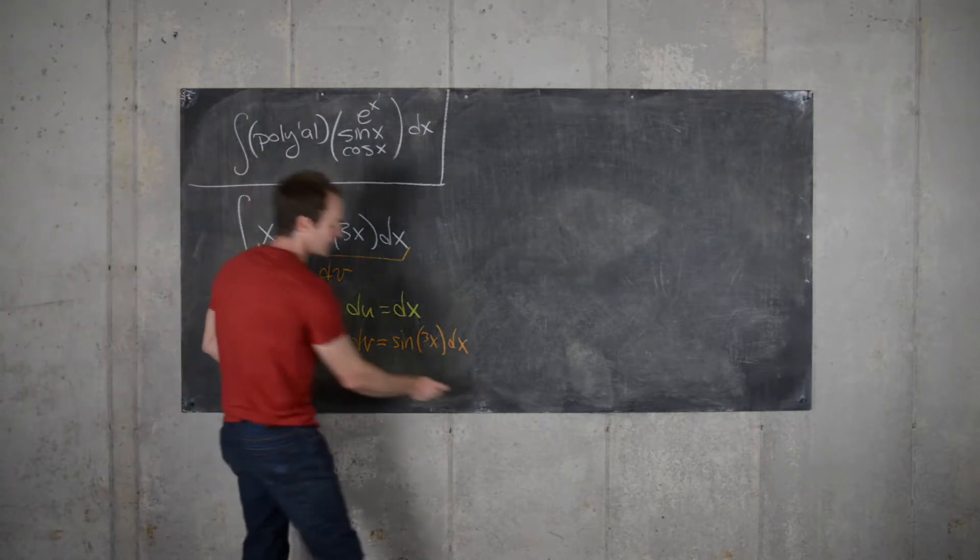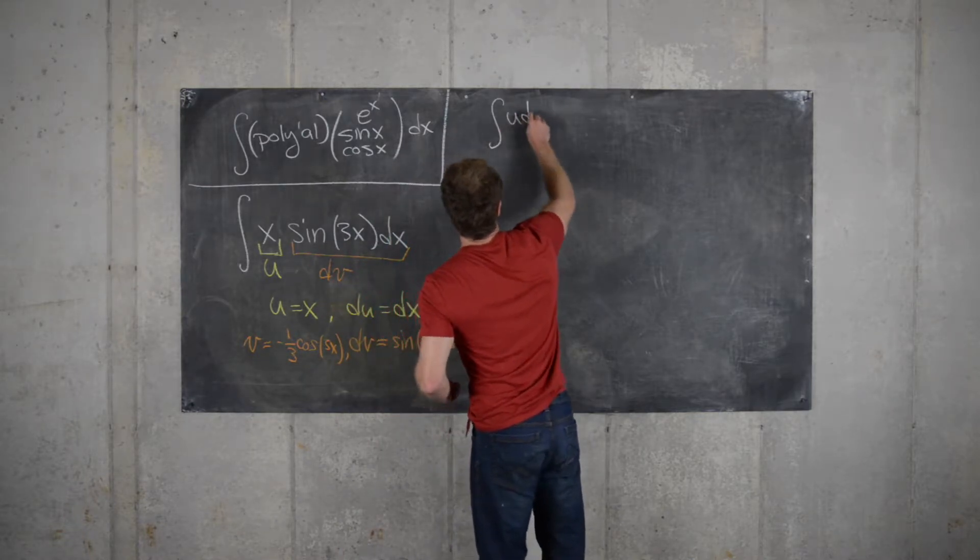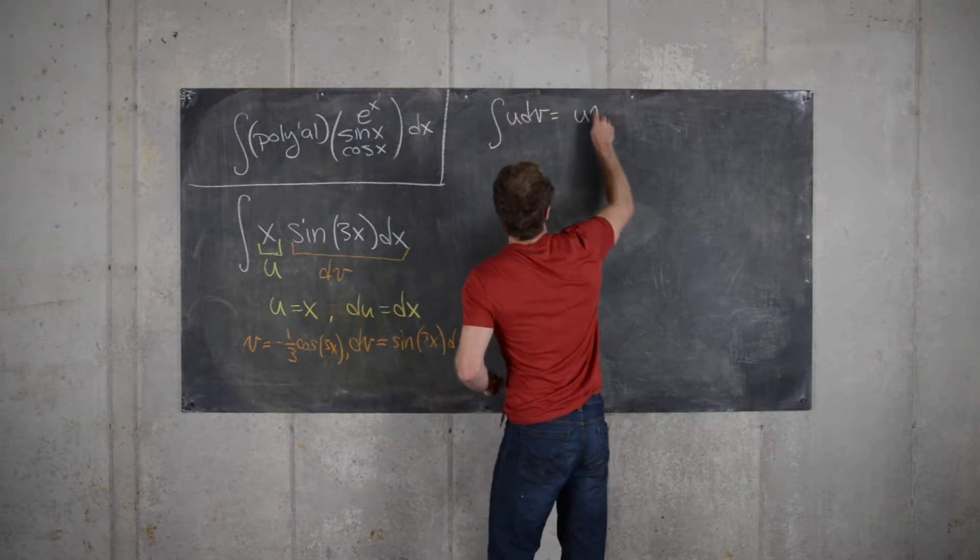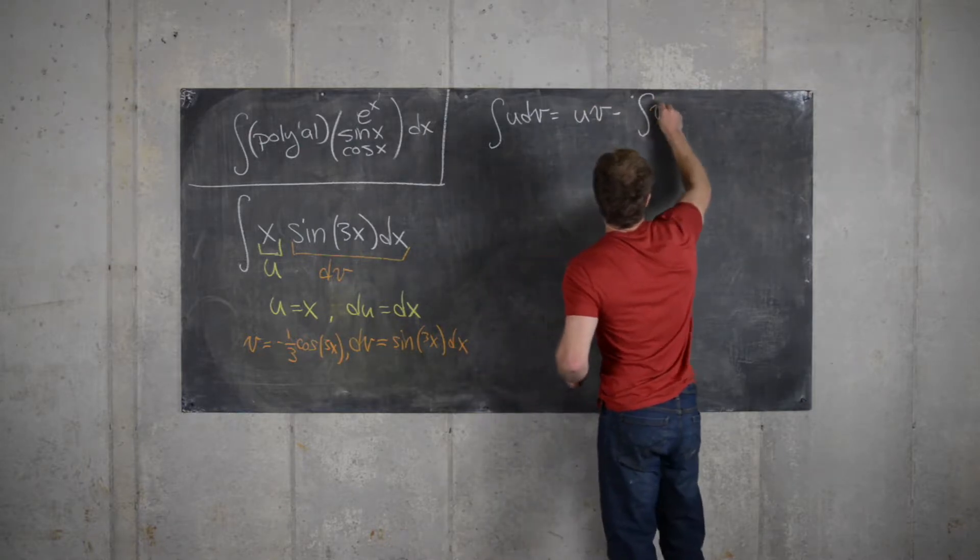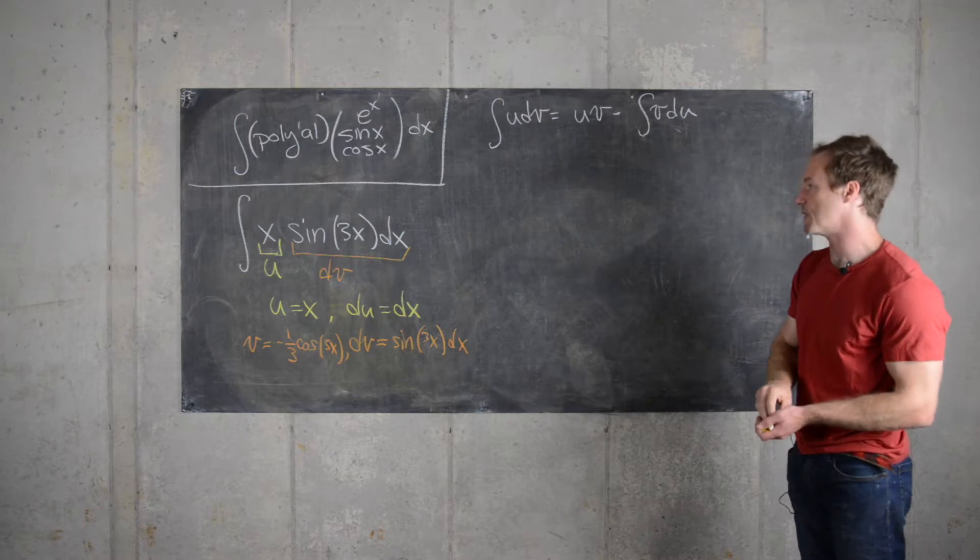Now if we remember back to our general integration by parts formula, we have the integral of u dv equals u v minus the integral of v du. So we're going to apply that to the setup that we've made over here.